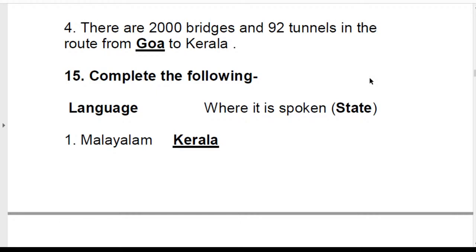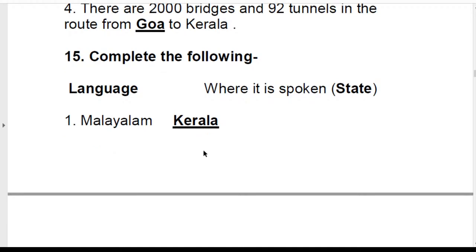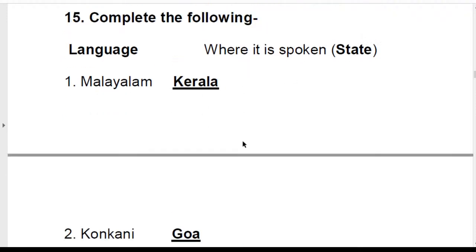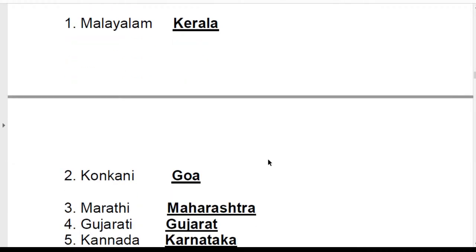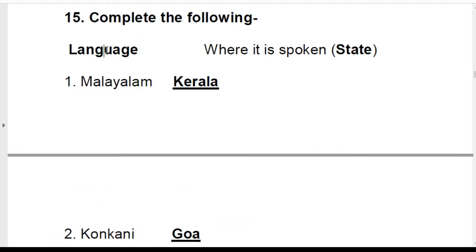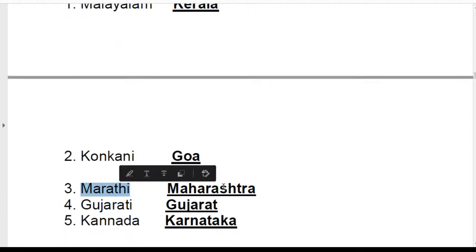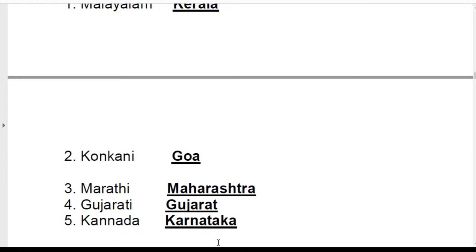There are 2,000 bridges and 92 tunnels on the route, because there are so many water bodies and mountains. Now review the languages again: Malayalam — Kerala; Konkani — Goa; Marathi — Maharashtra; Gujarati — Gujarat. On the left there is the language, on the right is the state.